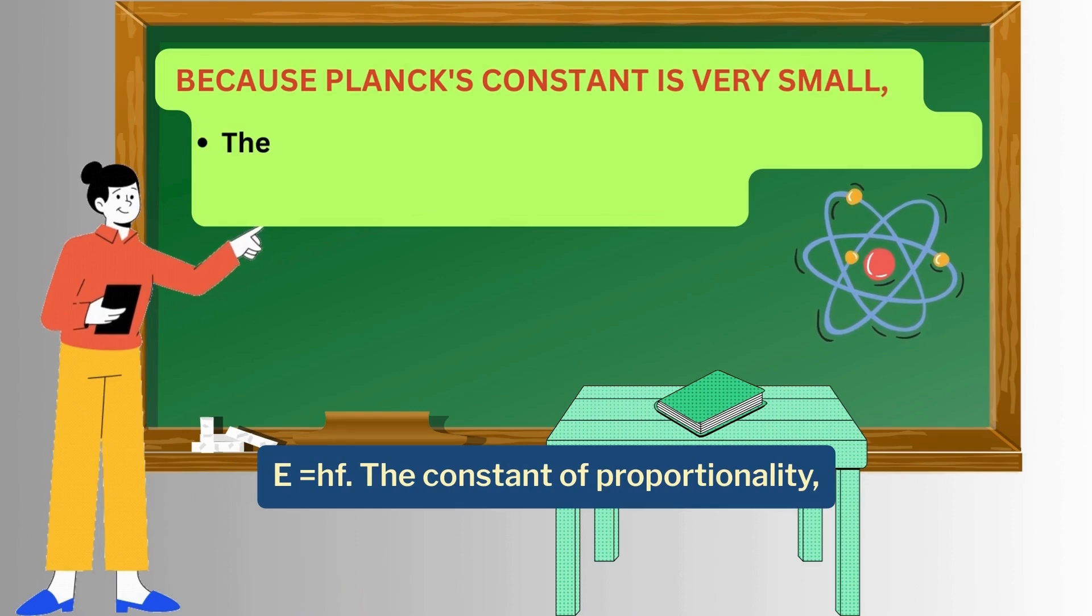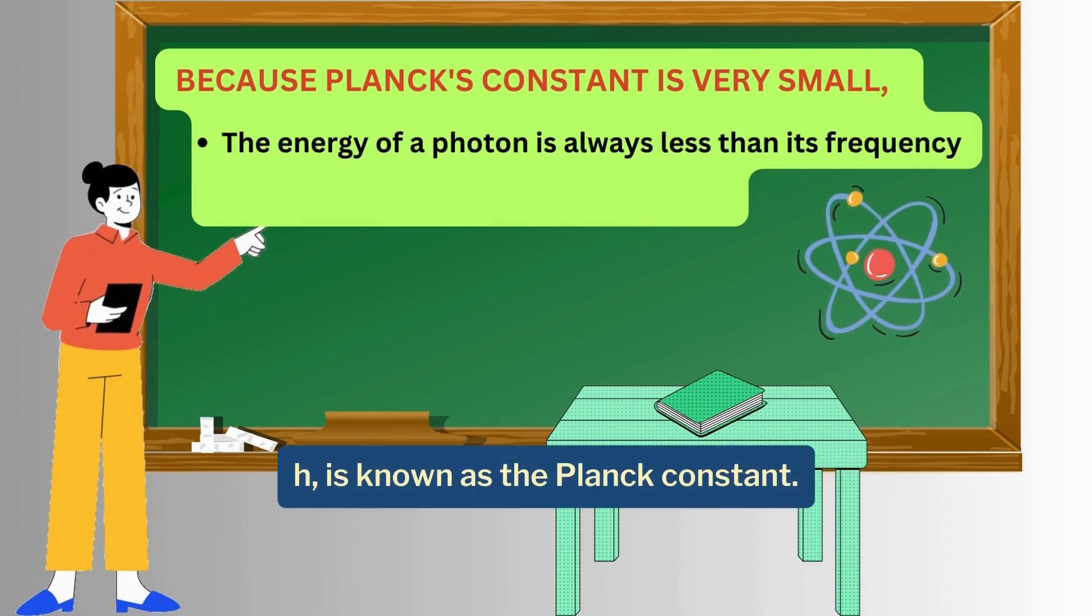E equals hf. The constant of proportionality, h, is known as the Planck constant.